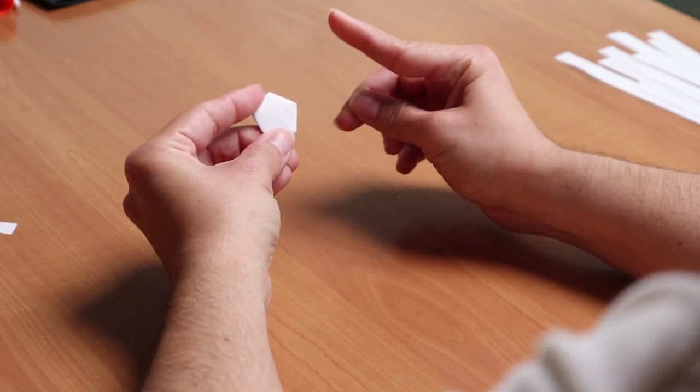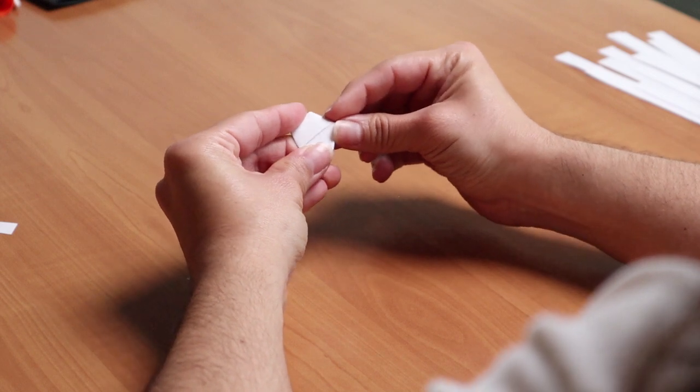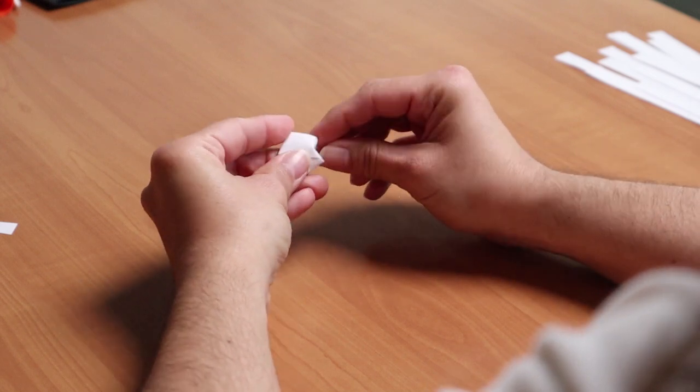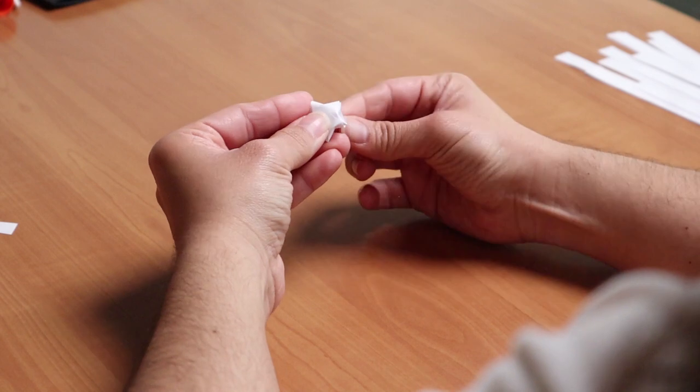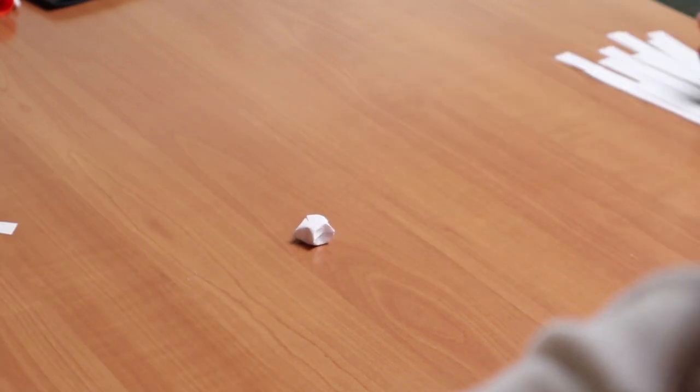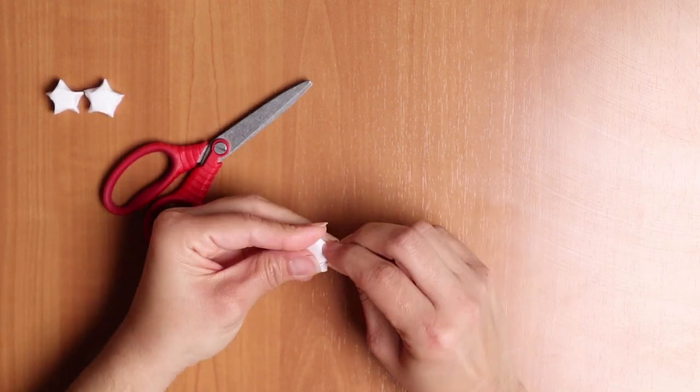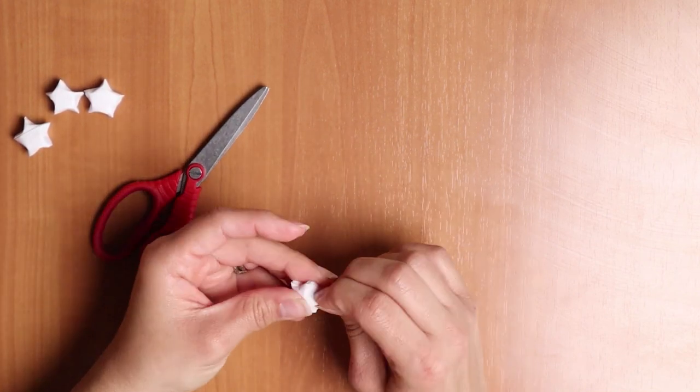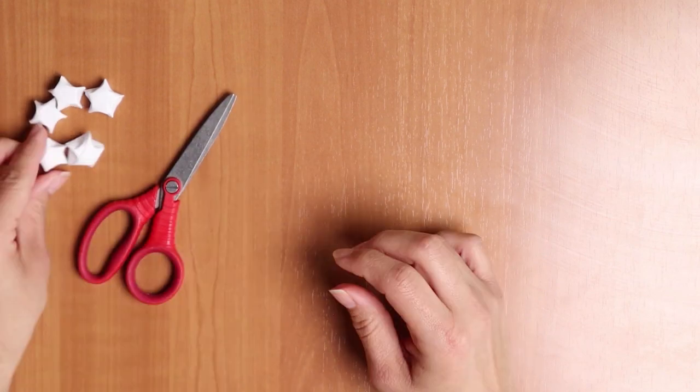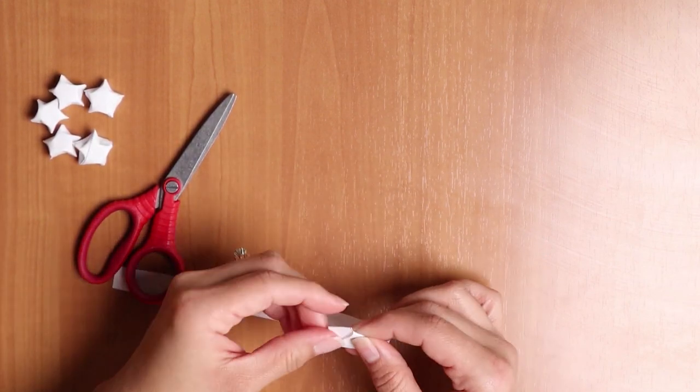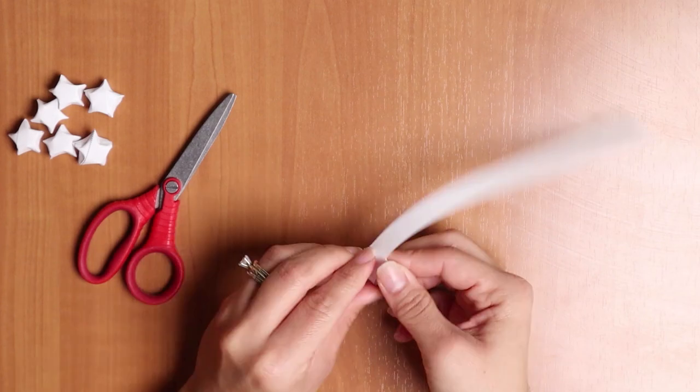Step six, using your fingernail, slowly press the center of each of its edges. We will repeat steps two through six for each individual star. The Little Dipper requires seven stars, but you can make as many as you would like. Once you've completed all stars, put them aside for now.